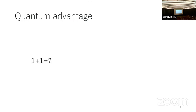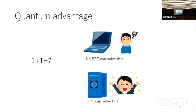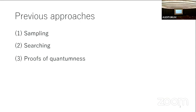We have some very difficult problem that is hard for classical efficient algorithms — no PPT (probabilistic polynomial time) algorithm can solve it — but on the other hand there exists some QPT (quantum polynomial time) algorithm that can solve it. If such a problem exists, we say quantum advantage exists. There are three approaches to demonstrate quantum advantage: sampling, searching, and proofs of quantumness.